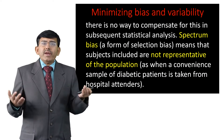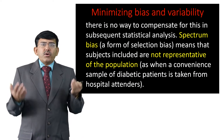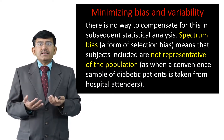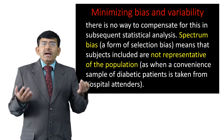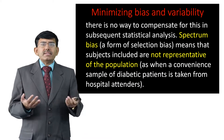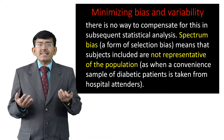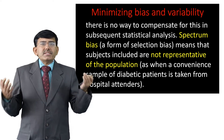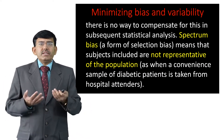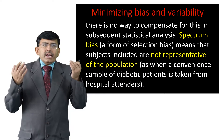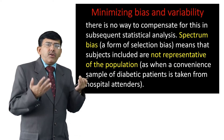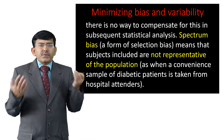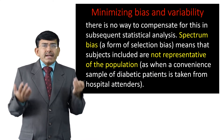There is no way to compensate for this in subsequent statistical analysis. Spectrum bias, a form of selection bias, means that subjects included are not representative of the population — as when a convenient sample of diabetic patients is taken from hospital attenders.